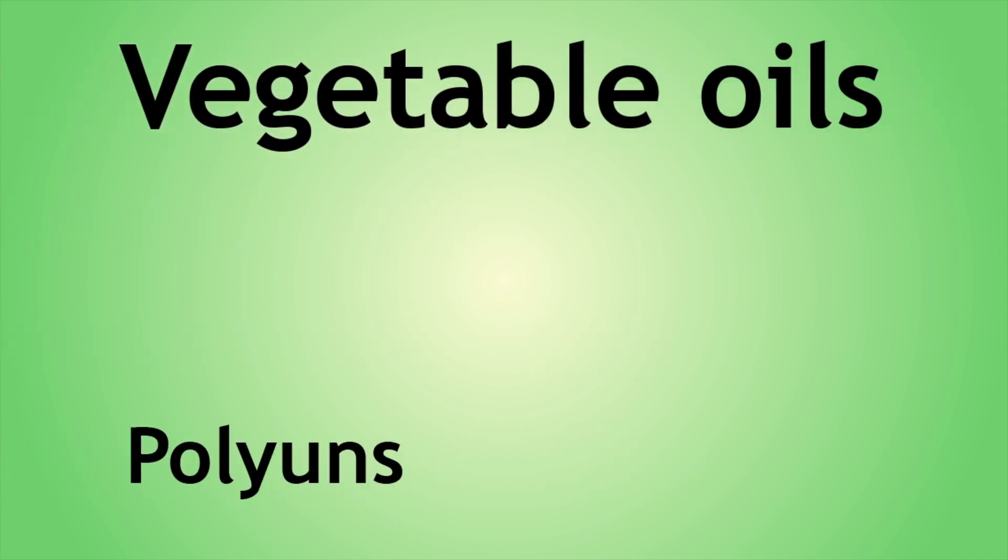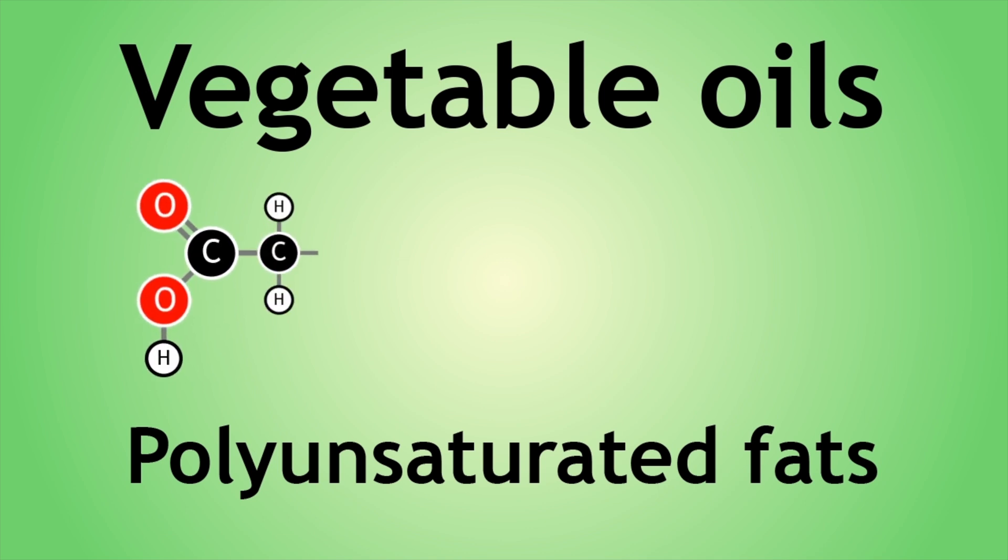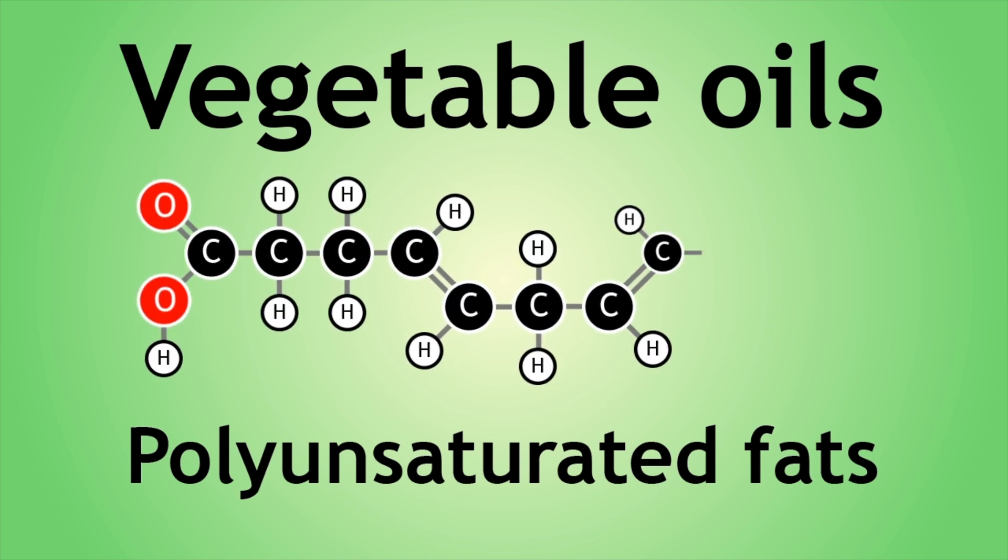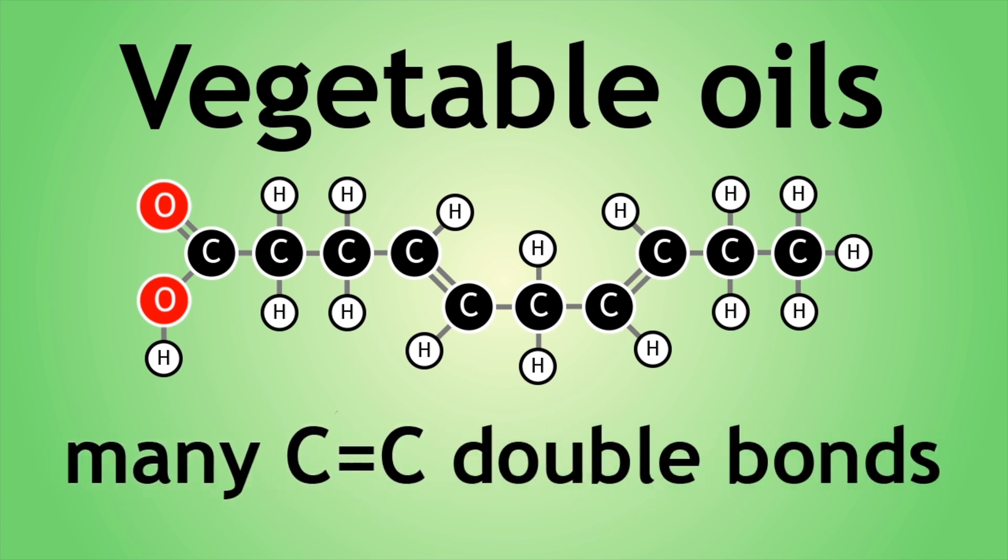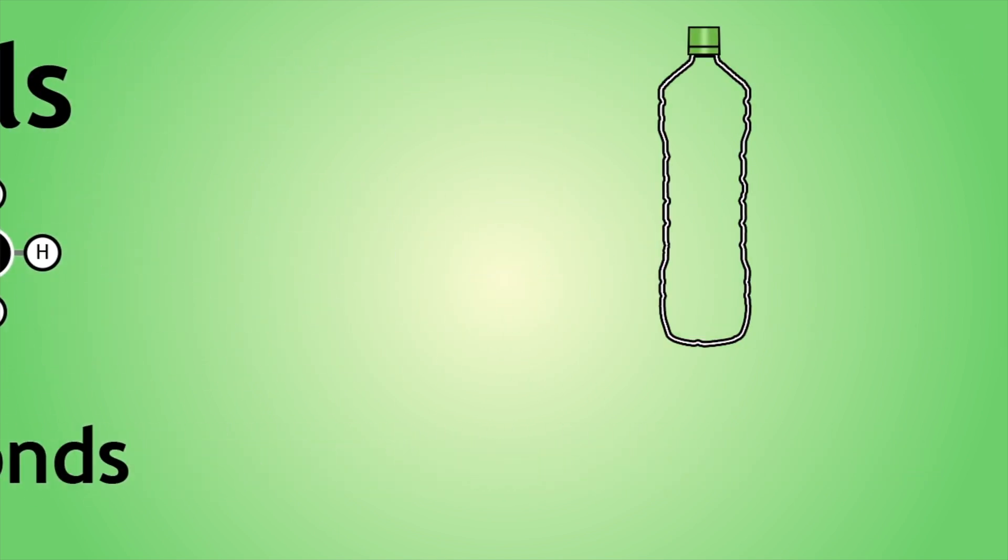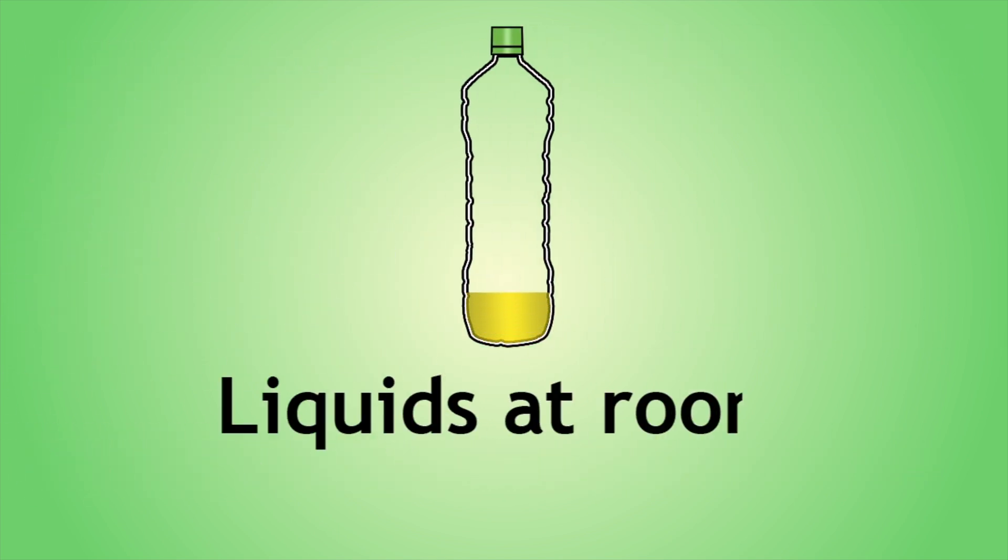Vegetable oils are polyunsaturated fats. You may be familiar with the term unsaturated to describe the presence of carbon-carbon double bonds within a hydrocarbon structure. So a polyunsaturated fat will have many carbon-carbon double bonds within its structure. These fats are normally liquids at room temperature.